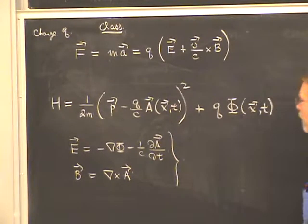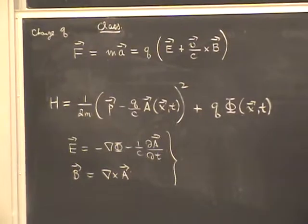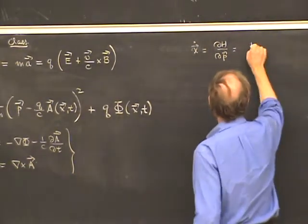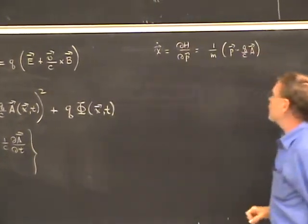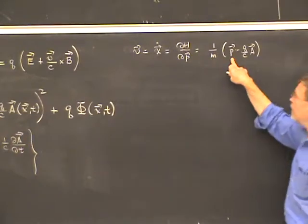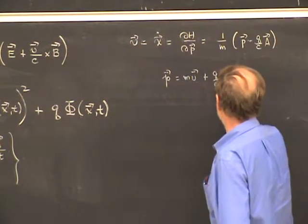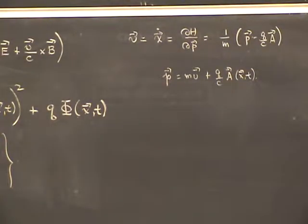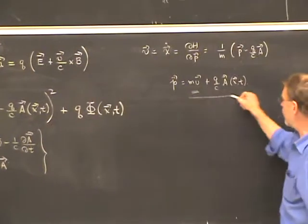If we take Hamilton's equations of motion — this whole board is classical up to this point — x-dot according to Hamilton's equations is dH/dP. Doing the derivative gives (1/m)(P minus Q/c times A). And x-dot is of course the velocity. Solving for momentum as a function of velocity gives P equals m times velocity plus Q/c times the vector potential. So the momentum appearing in the classical Hamiltonian is not the kinetic momentum (just the first term) but rather the canonical momentum — the whole thing.